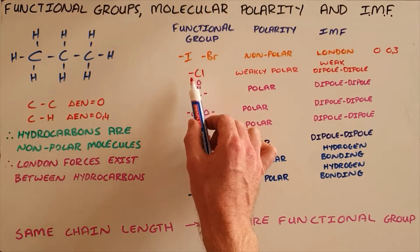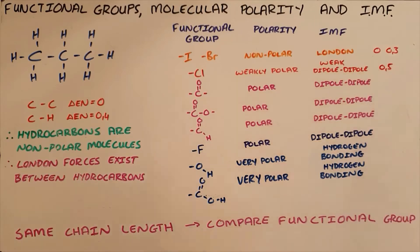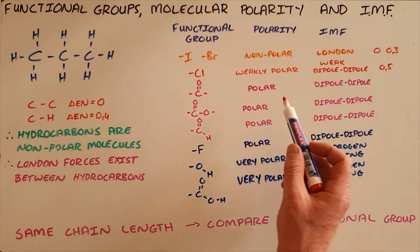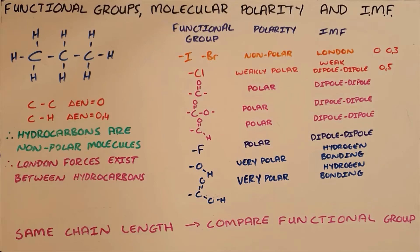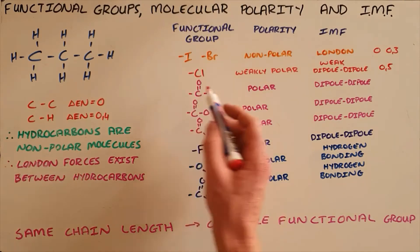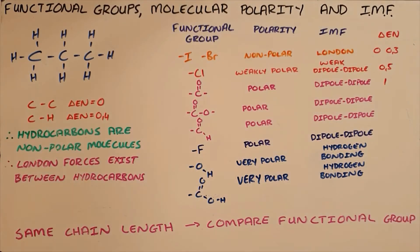The chlorine functional group is said to be weakly polar because it has an electronegativity difference of 0.5. As a result of this weak polarity, the intermolecular forces that exist between molecules containing this group are weak dipole-dipole forces. The next functional group is the carbonyl group that makes our ketones, and because of the carbon-oxygen bond which has an electronegativity difference of 1.0, that is a polar molecule and as a result there are dipole-dipole forces.